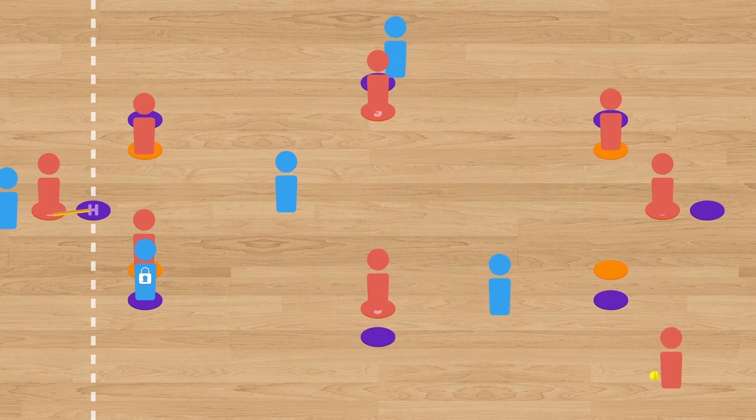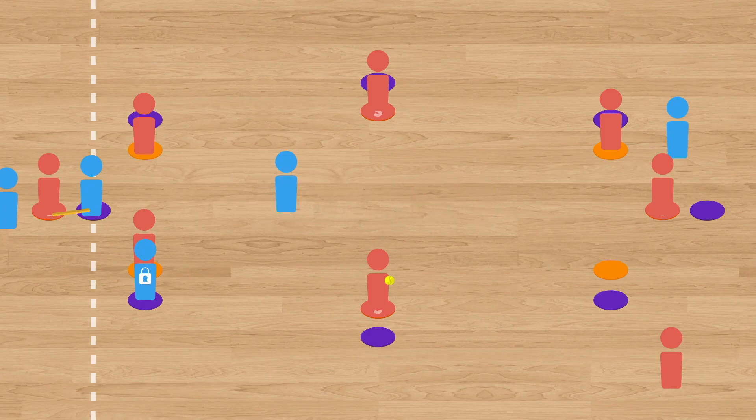Just as in the previous build, if a batting team player makes it around the bases and home before stop is called, they score a point for their team. Once every player has had a turn at bat, the two teams switch roles.